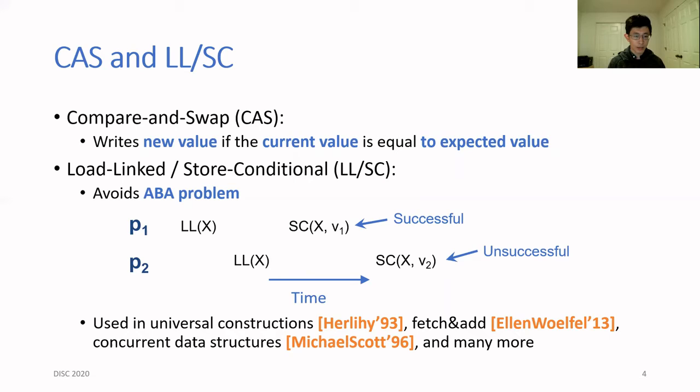In this example, process 1's SC operation will succeed, whereas process 2's will fail because there is a successful SC between process 2's LL and SC. It turns out that LL/SC is more intuitive to work with than compare-and-swap. For this reason, it's been used a lot throughout the literature, including for concurrent data structures, universal constructions, and also for implementing other primitives such as fetch-and-add.